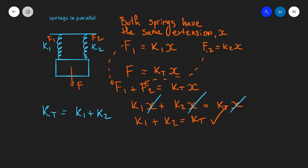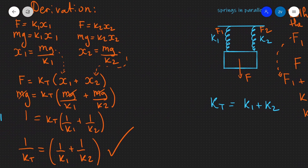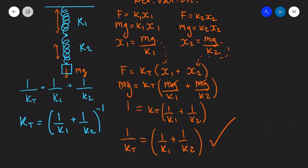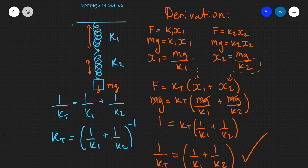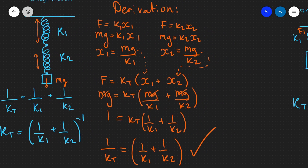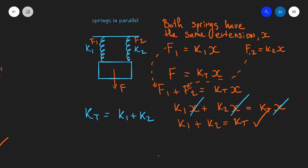Hopefully those two equations now make sense and we know where they come from, which is really important — and this may come up in an exam situation. Remember: if we have two springs in series, 1 over k total equals 1 over k1 plus 1 over k2, plus more terms if there are more springs. If we have springs in parallel, k total equals k1 plus k2. If there are any questions, please feel free to drop a comment below. Thank you very much.